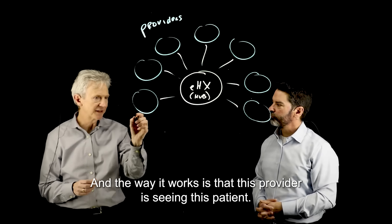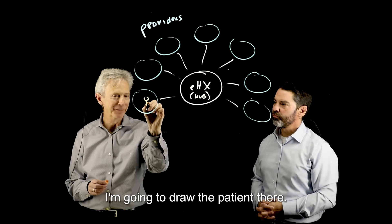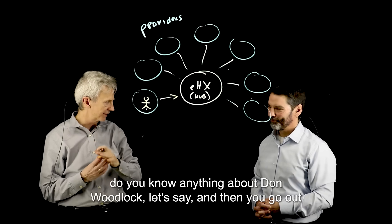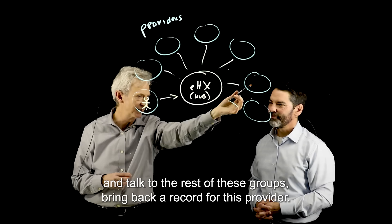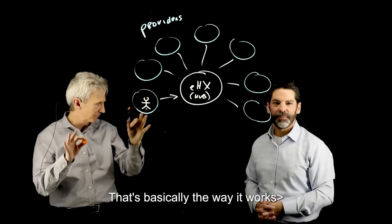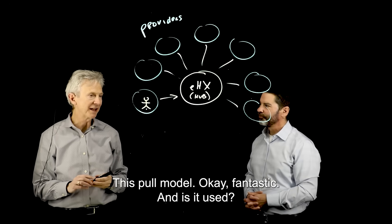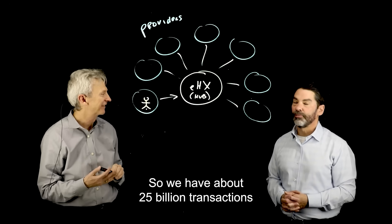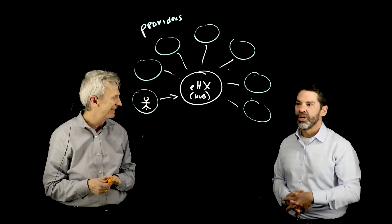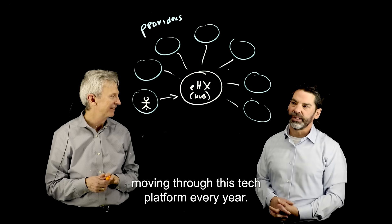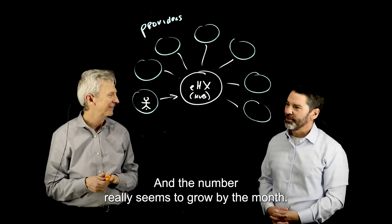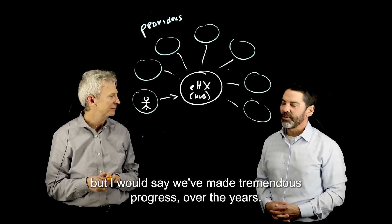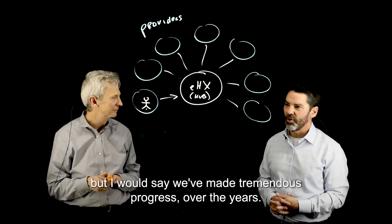The way it works is that this provider is seeing a patient — I'm going to draw the patient there — and they ask, do you know anything about Don Woodlock, let's say, and then you go out and talk to the rest of these groups and bring back a record for this provider. That's basically the way it works — this pull model. And we have about 25 billion transactions moving through this tech platform every year, and the number really seems to grow by the month.